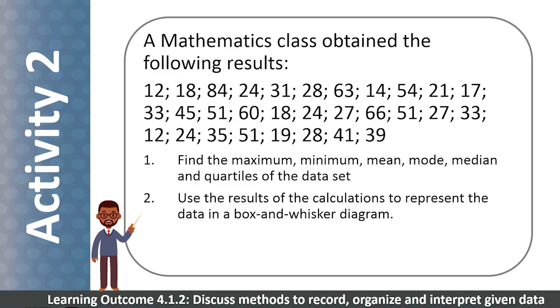This activity revises the measures of central tendency and dispersion from Level 2 and Level 3. We are going to find the five number summary and draw a box and whisker chart for your data. Work quickly through this problem on your own or in pairs.